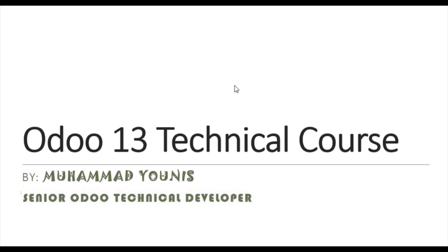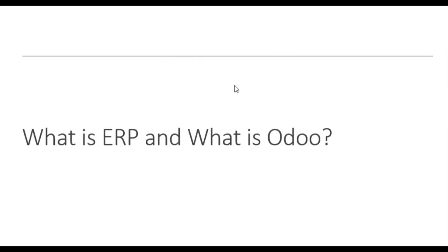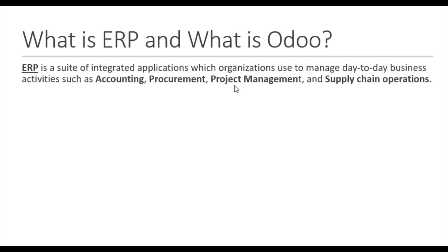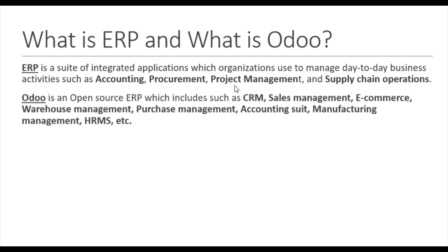You can join the Facebook group and ask your questions there as well. Now I want to briefly explain what an ERP is and what Odoo is. ERP is a sort of integrated application which organizations use to manage day-to-day business activities such as accounting, procurement, project management, and supply chain operations.